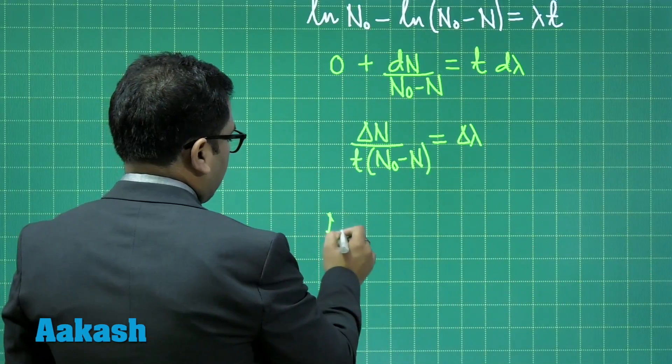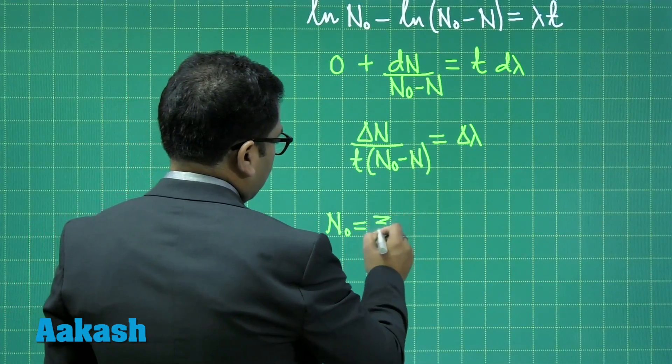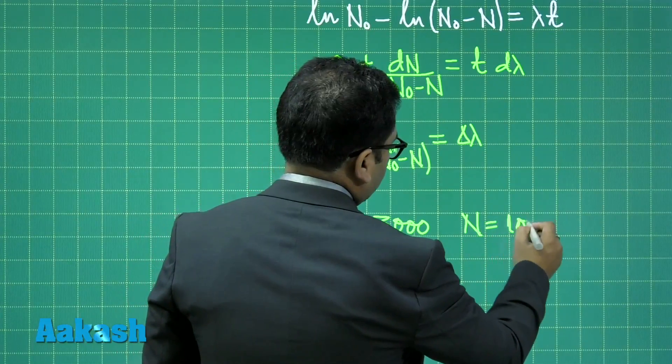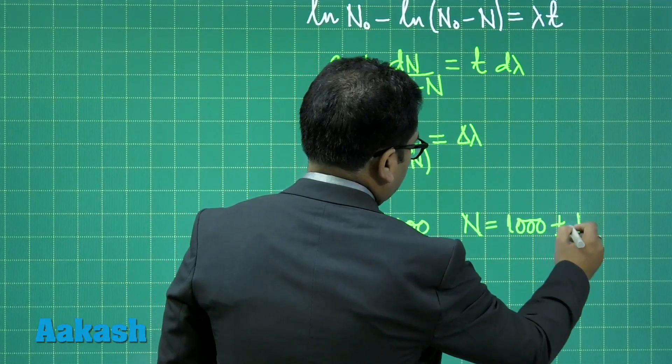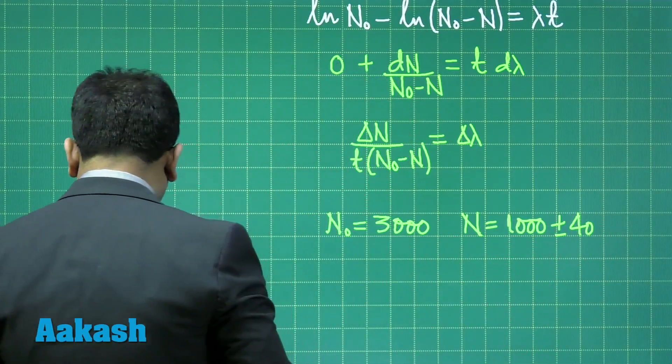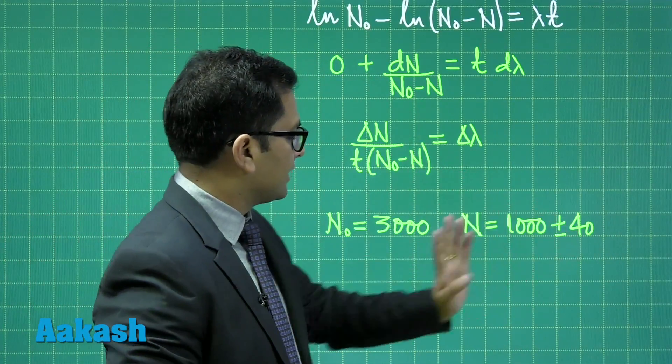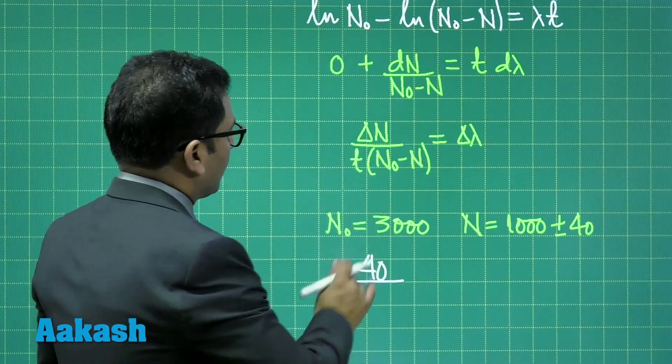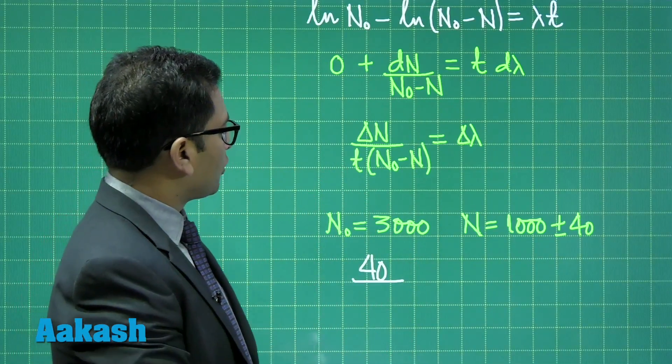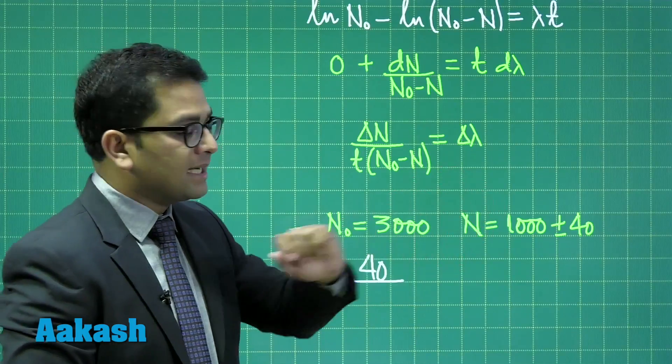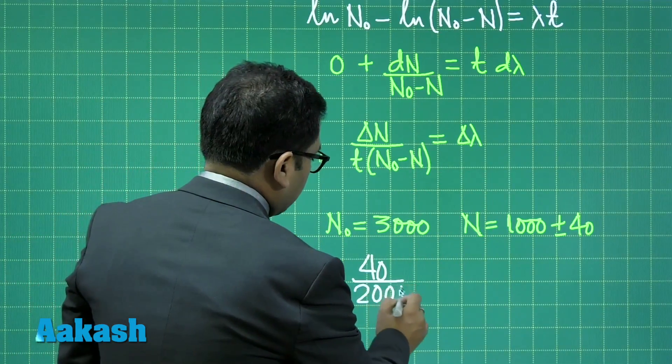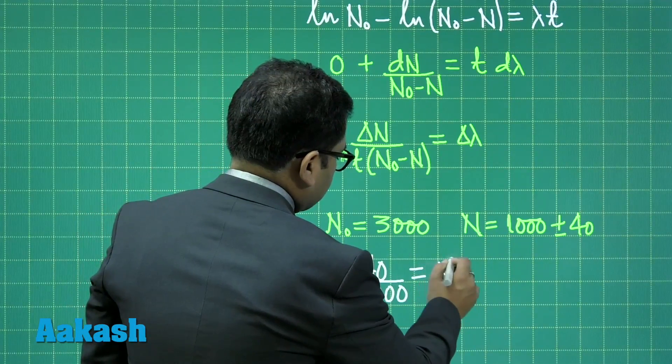You could see N naught is 3000, while N is 1000 plus minus 40. So now, things are so clear in front of you, delta N is quite obviously equals to 40. The time is 1 second, so that's no point putting there. N naught minus N, if you do, the value you need to put is 2000. And that comes out to be delta lambda.